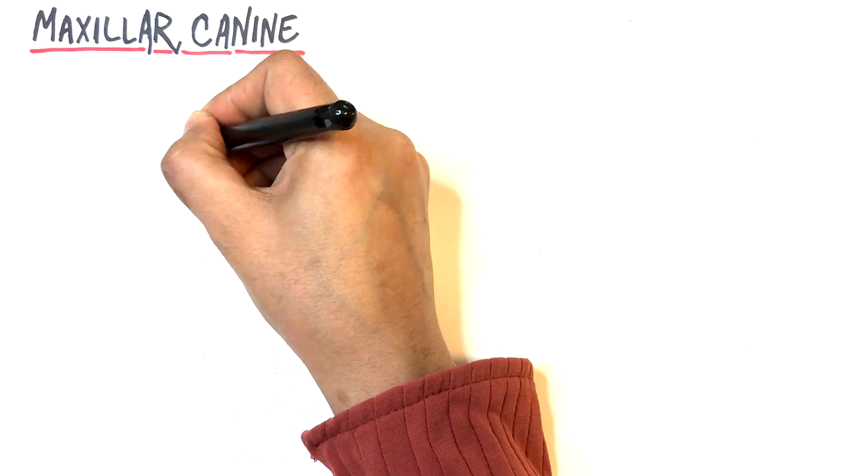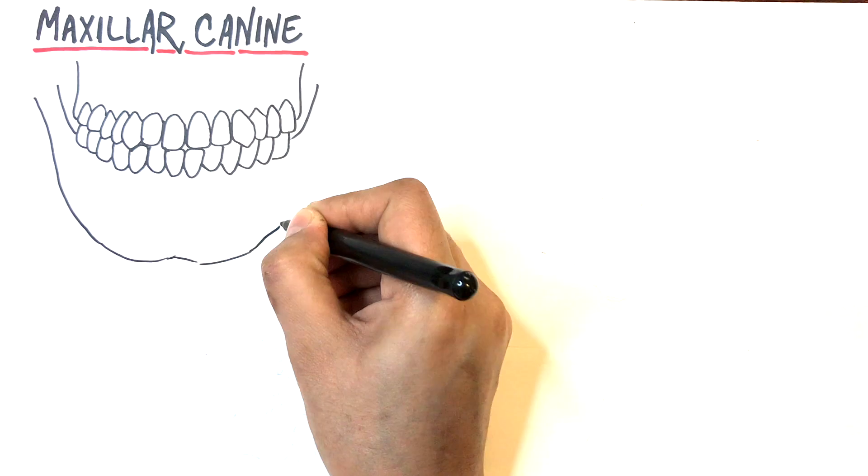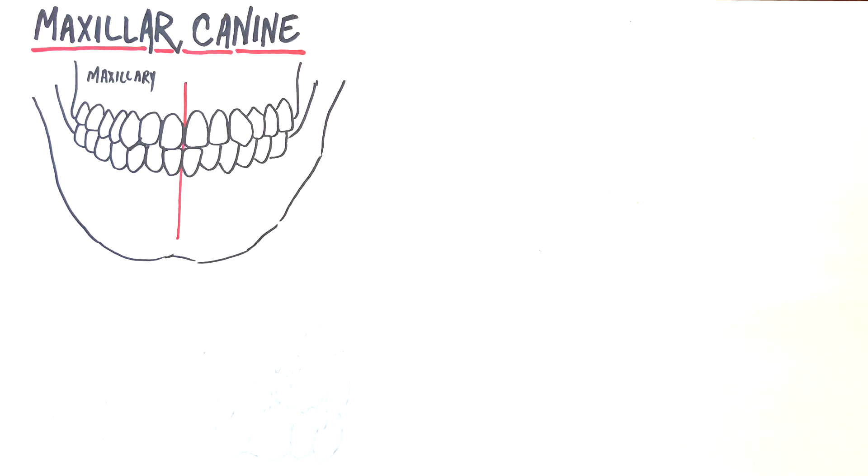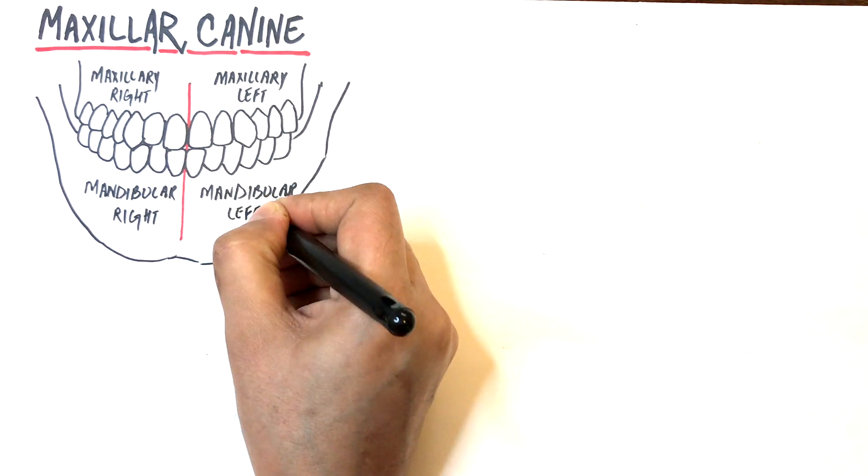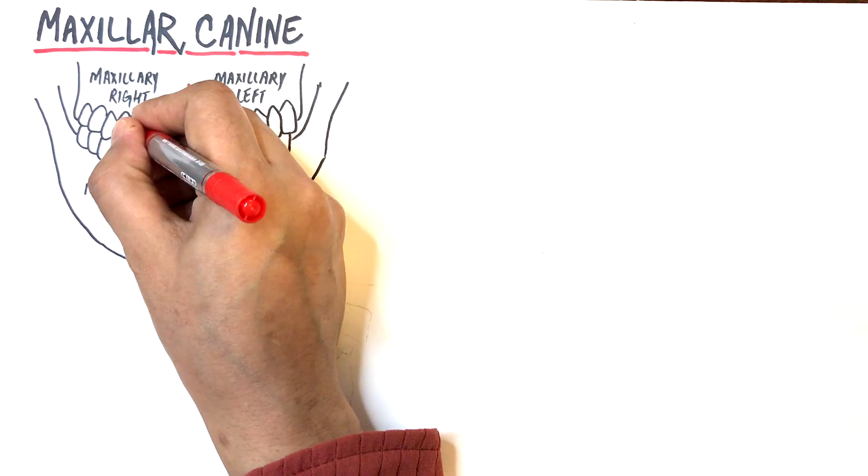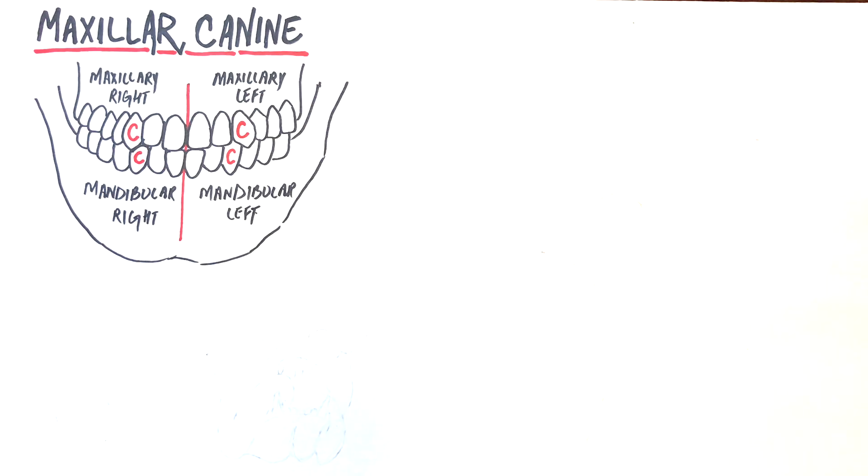Canines are the four anterior teeth located at the corners of each quadrant for each dental arch. Since they are located between the anterior or incisor teeth and the posterior or premolars and molar teeth, they are called the cornerstones of the mouth.